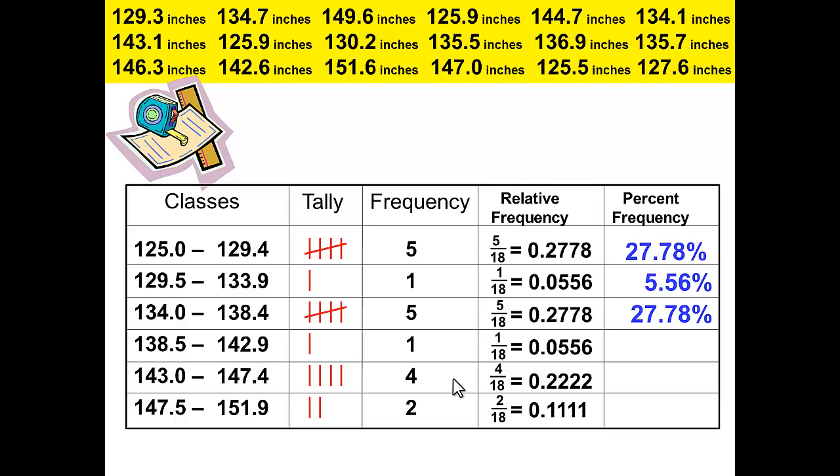That then gave us 27.78 percent, 5.56 percent, 27.78 percent, 5.56 percent, 22.22 percent, and 11.11 percent. And that completes the percent frequency distribution.